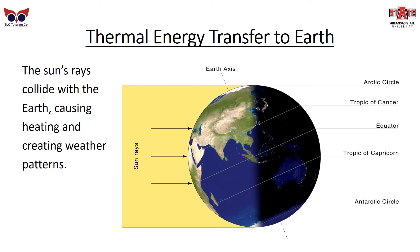All heat on the Earth ultimately comes from the sun, which transfers thermal energy to the Earth. The Earth is tilted at about 23 degrees, and the sun's rays cause heating on the side of the Earth they're facing. Because the Earth is heated unevenly — both because the sun only faces half the Earth at a time and because the Earth is tilted — this leads to different weather patterns and especially water temperature changes throughout the world.